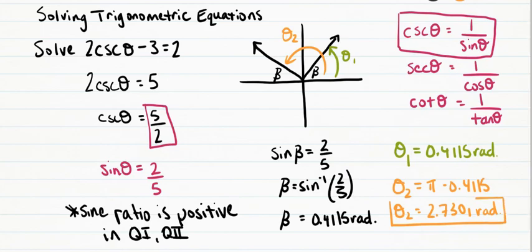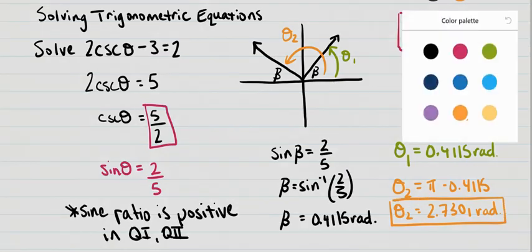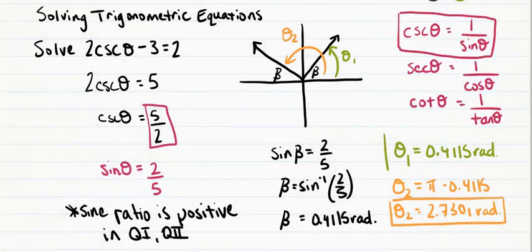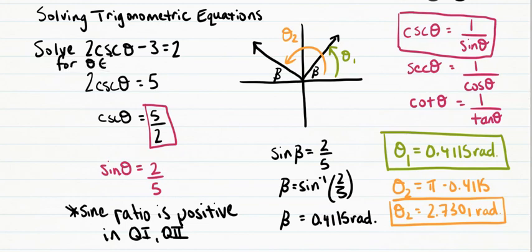So we have our two solutions here. I should note that all of the trig equations we're going to be solving today we're looking for solutions from 0 to 2 pi, and we've found the solutions that would occur between 0 and 2 pi because in quadrants 3 and 4 the sine ratio would be negative, so there are no more remaining solutions between 0 and 2 pi.